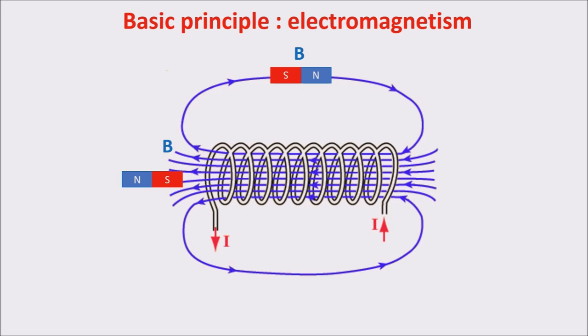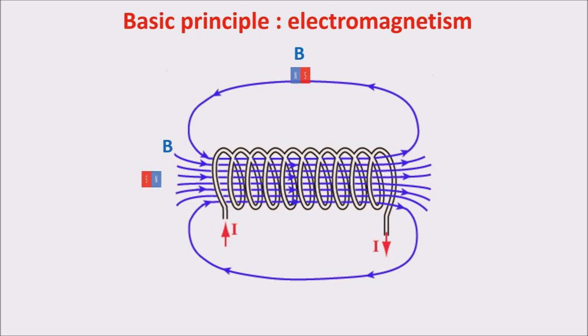If we change the direction of the current, the direction of the magnetic field changes as well, thus changing the orientation of the magnetic material. So in the end, if we change the electric current direction, we change the orientation of the magnetic material.